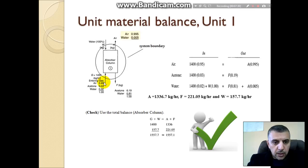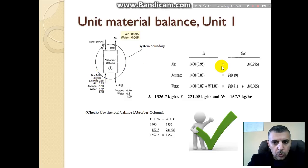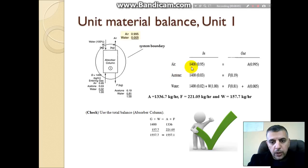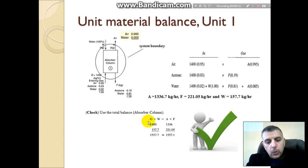For the air material balance in the absorber column: air is present only in streams G and A. Therefore, the percentage of air in G times 1400 equals the percentage of air in stream A. The same approach is applied to acetone and water. With three unknowns — A, F, and W — and three equations, the system can be solved to get the values of A, F, and W.